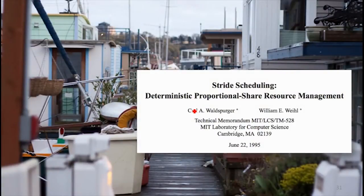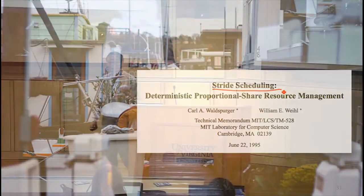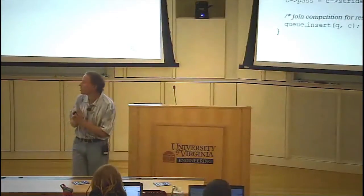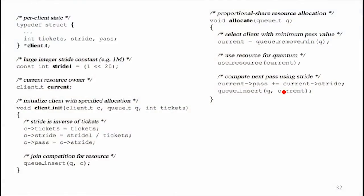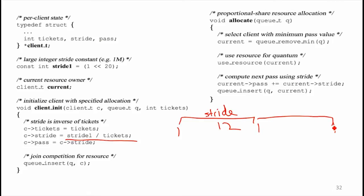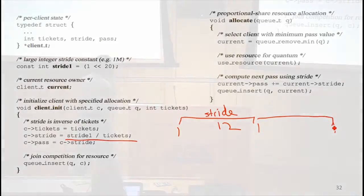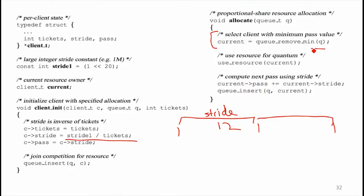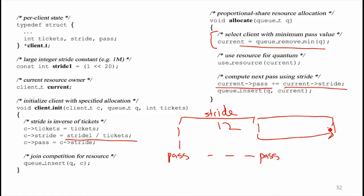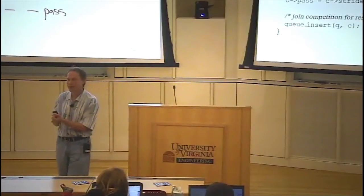The other scheduling algorithm from the dissertation is stride scheduling, which gives you pretty much the same flexibility as lottery scheduling — you can share tickets and give processes whatever priority you want — but with a guarantee. Stride scheduling works by giving each process a stride value. You maintain a pass counter per process; the scheduler picks the process with the minimum pass value that has reached its stride, runs it, and then increments that process's pass value by its stride. So it won't run again until that stride time has passed, and then it gets highest priority again.